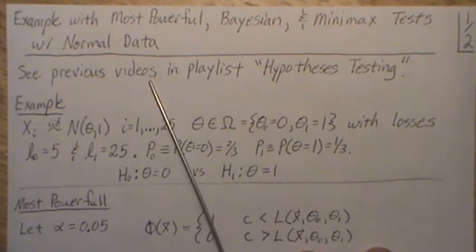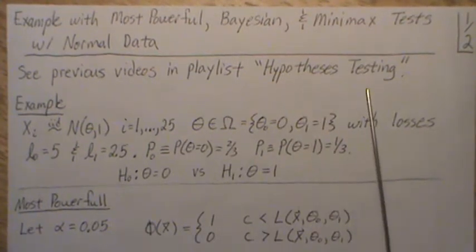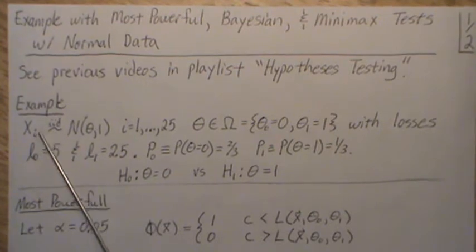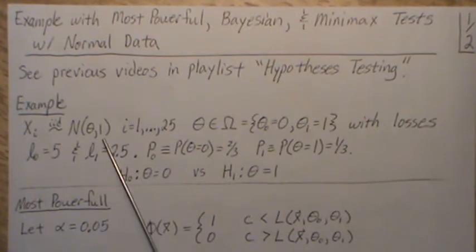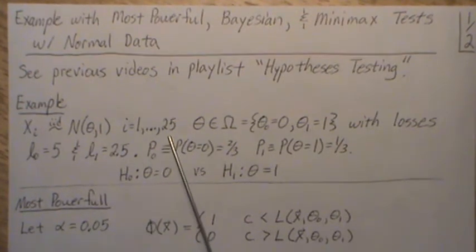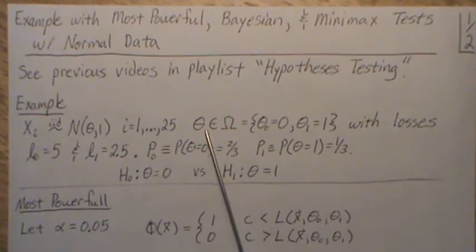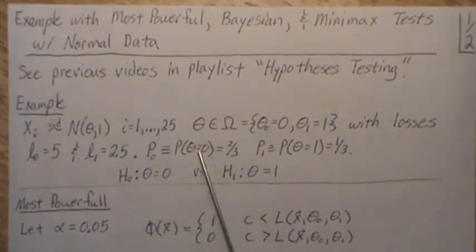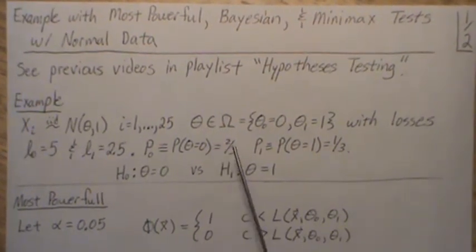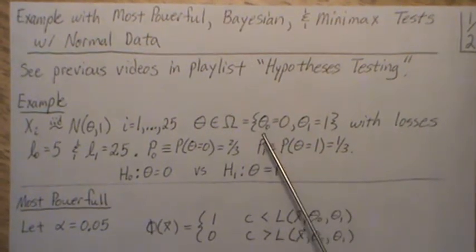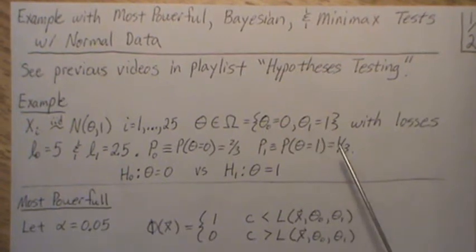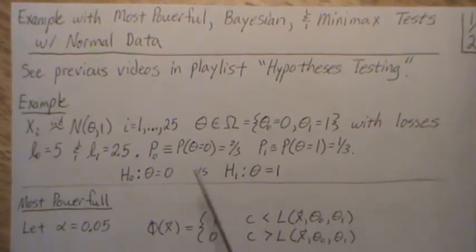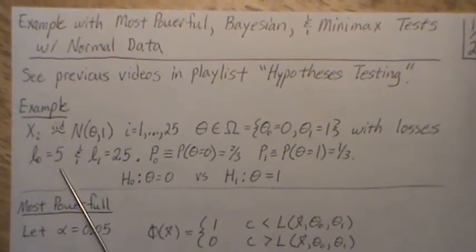I encourage you to watch the previous videos in the playlist. The example we're going to do: our data is normally distributed IID with some mean theta and variance 1. We're going to take a sample of 25. Theta lives in the parameter space omega, which has two points, theta_0 and theta_1, and theta_0 is equal to 0 and theta_1 is equal to 1.